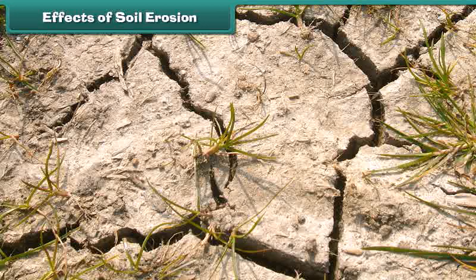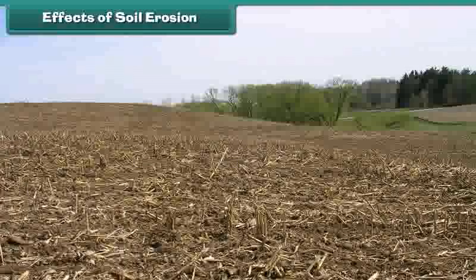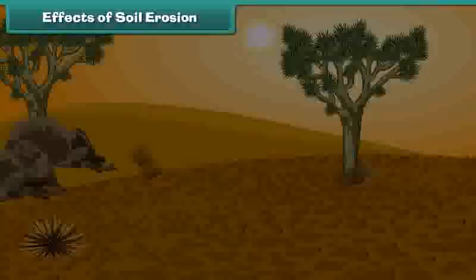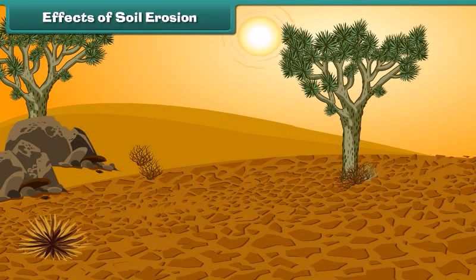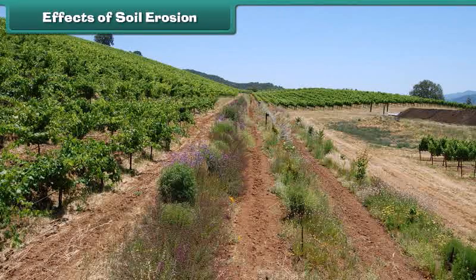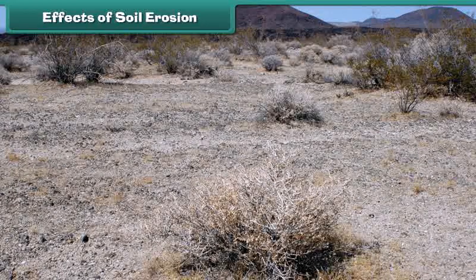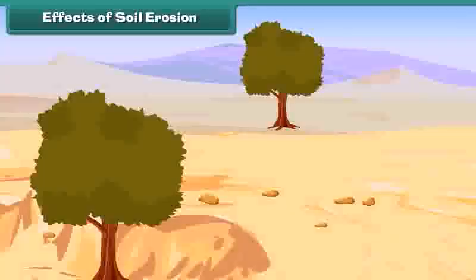Soil erosion leads to many unfavorable conditions. It results in the loss of soil and breakdown of soil structure. It decreases soil fertility due to a decrease in organic matter, and also reduces the moisture content of soil, resulting in drought conditions. Decrease in soil fertility leads to a decrease in the quality and quantity of crops, and affects natural vegetation badly, which can turn fertile land into desert.